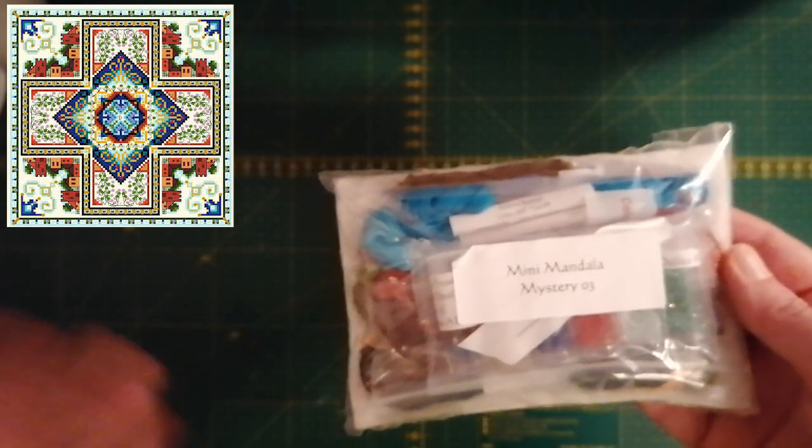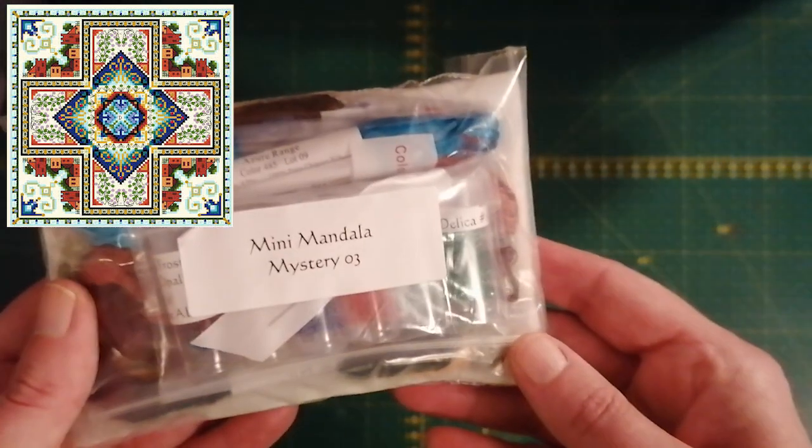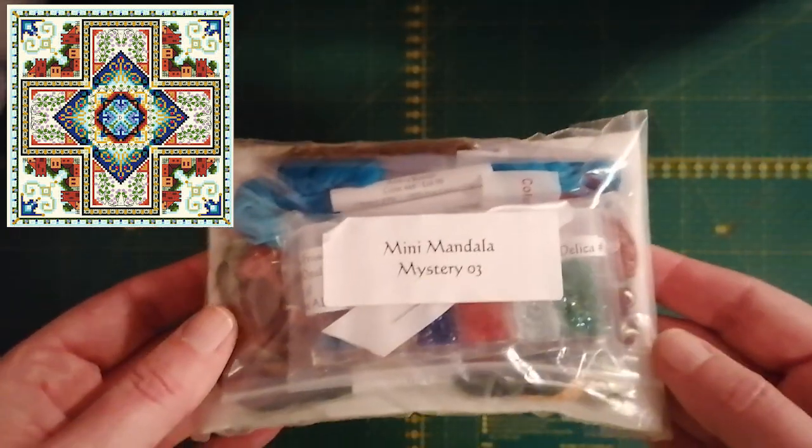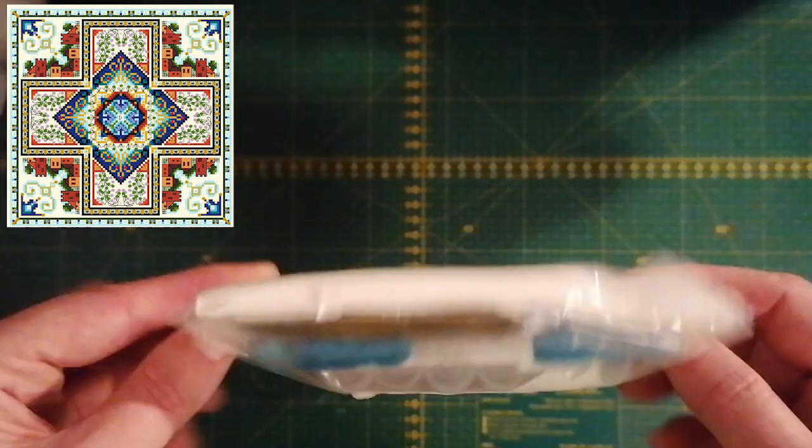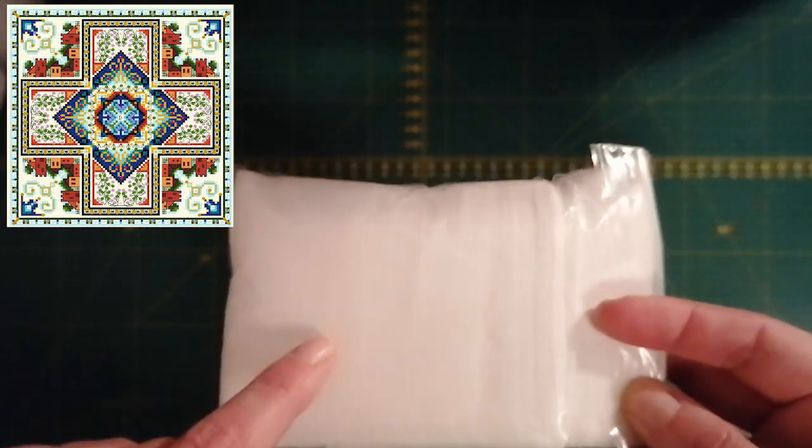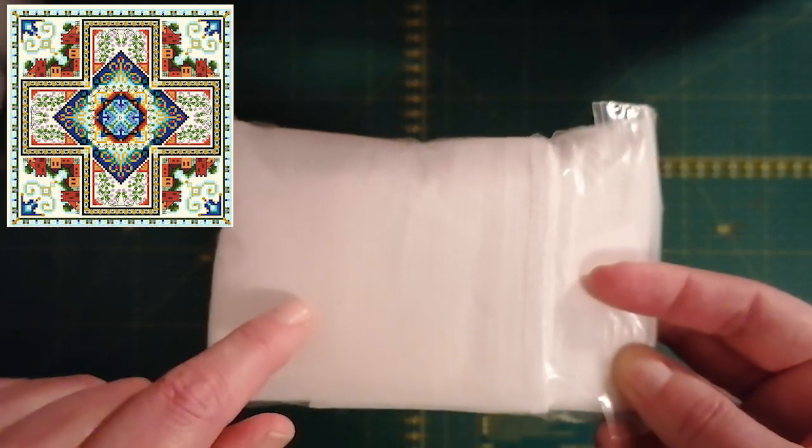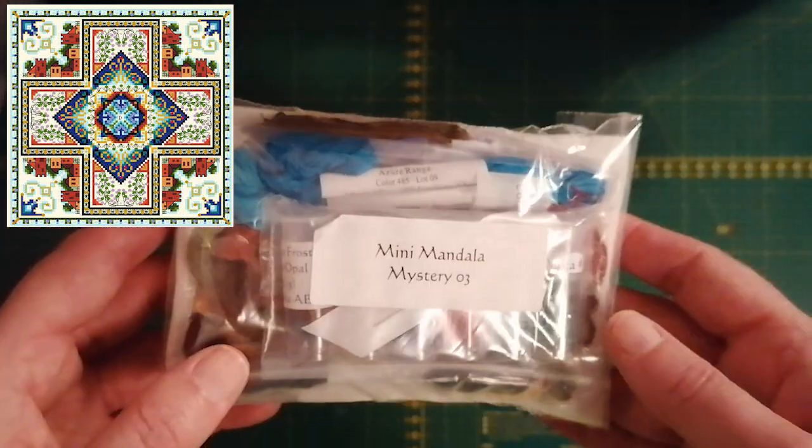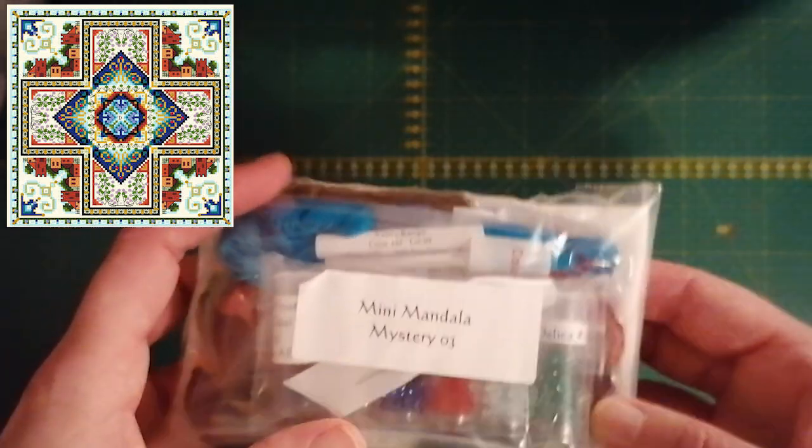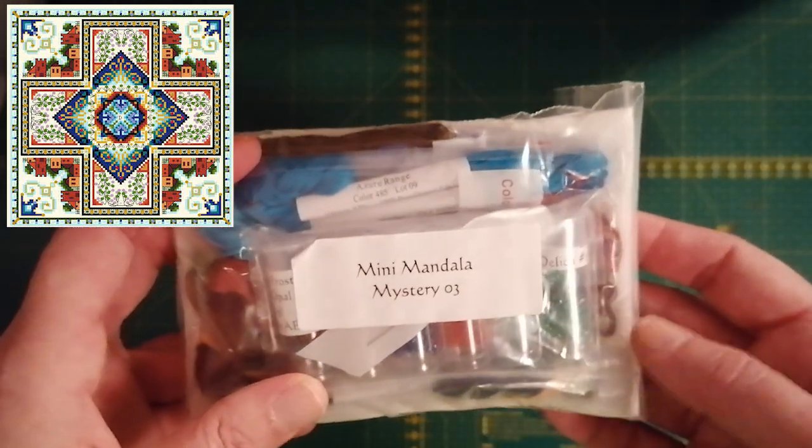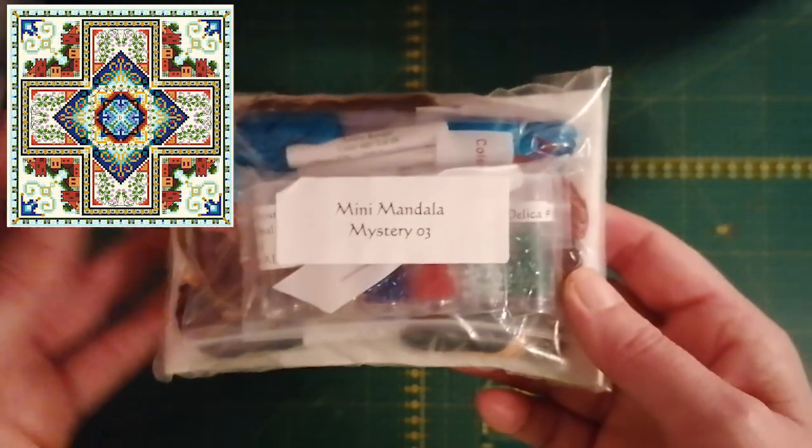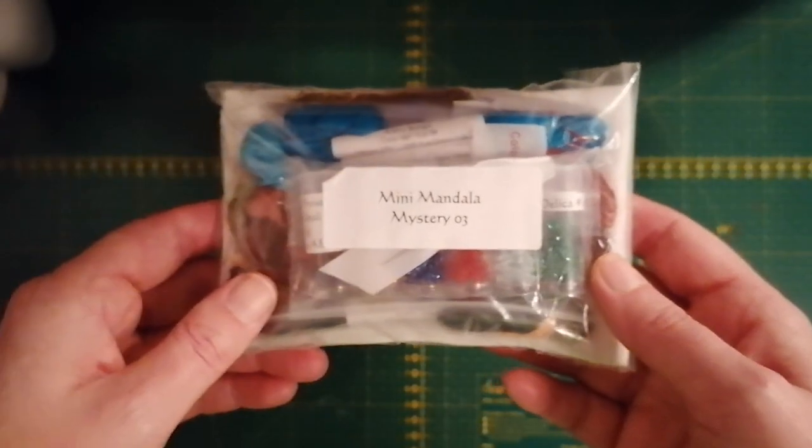I'm sorry about the lights. I don't have any studio lights, so I will try to make it as good as possible for you guys. This is a small kit I bought to try the 32 count linen for these Chatelaine pieces, because the one I'm stitching now, Poison Garden, is on 28 count even weave.